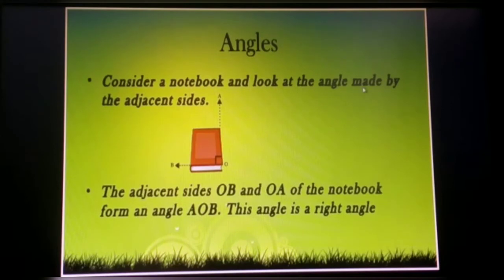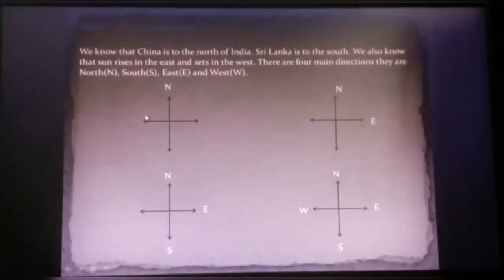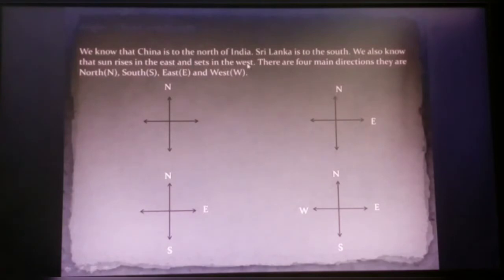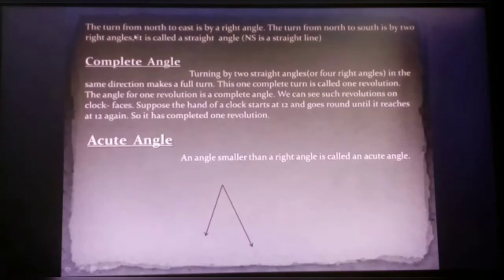Now, the angles. Consider a notebook — look at the angles made by the adjacent sides. The adjacent sides OB and OA of the notebook form the angle AOB. This angle is a right angle. We know that China is north of India, Sri Lanka is to the south. Sunrise is in the east and sunset is in the west. These are the four main directions: north, south, east, and west. The turn from north to east is a right angle. The turn from north through two right angles is called a straight angle.